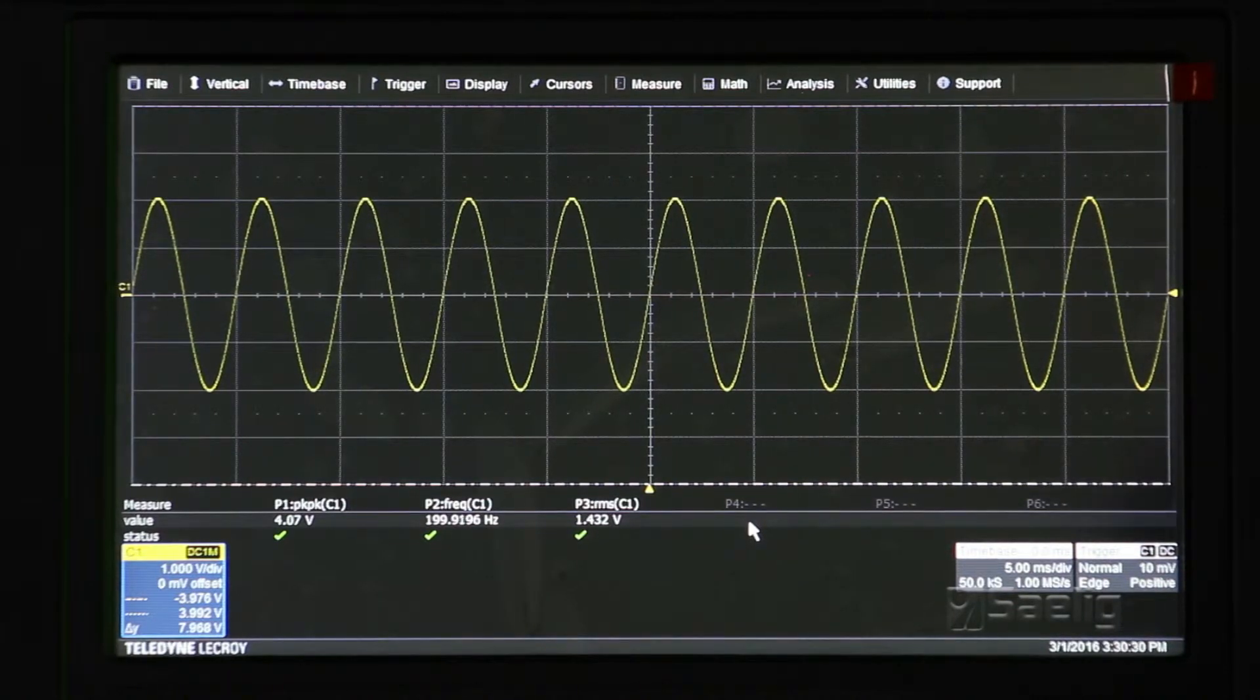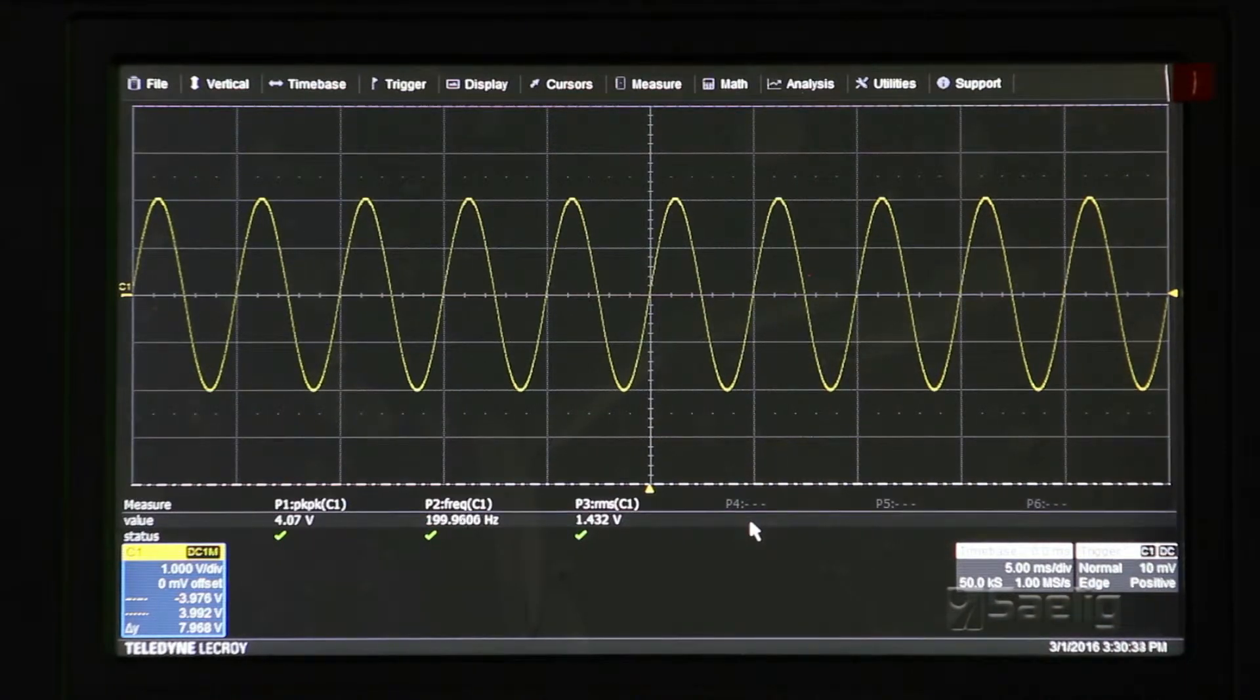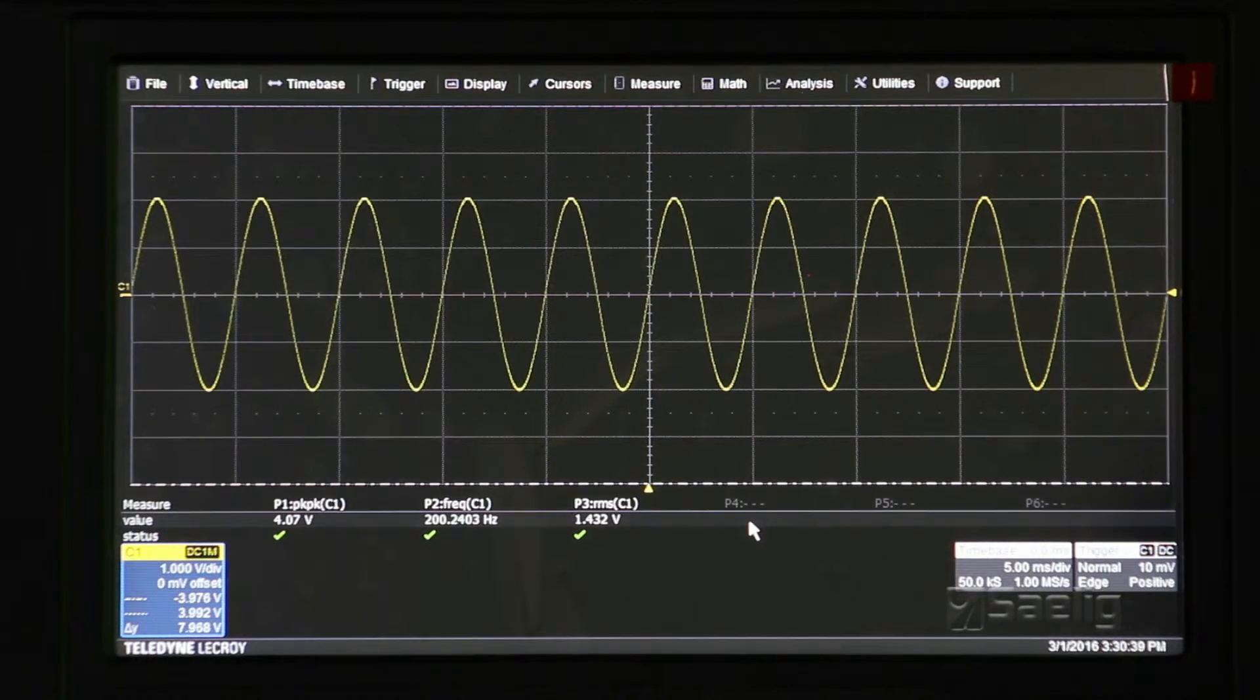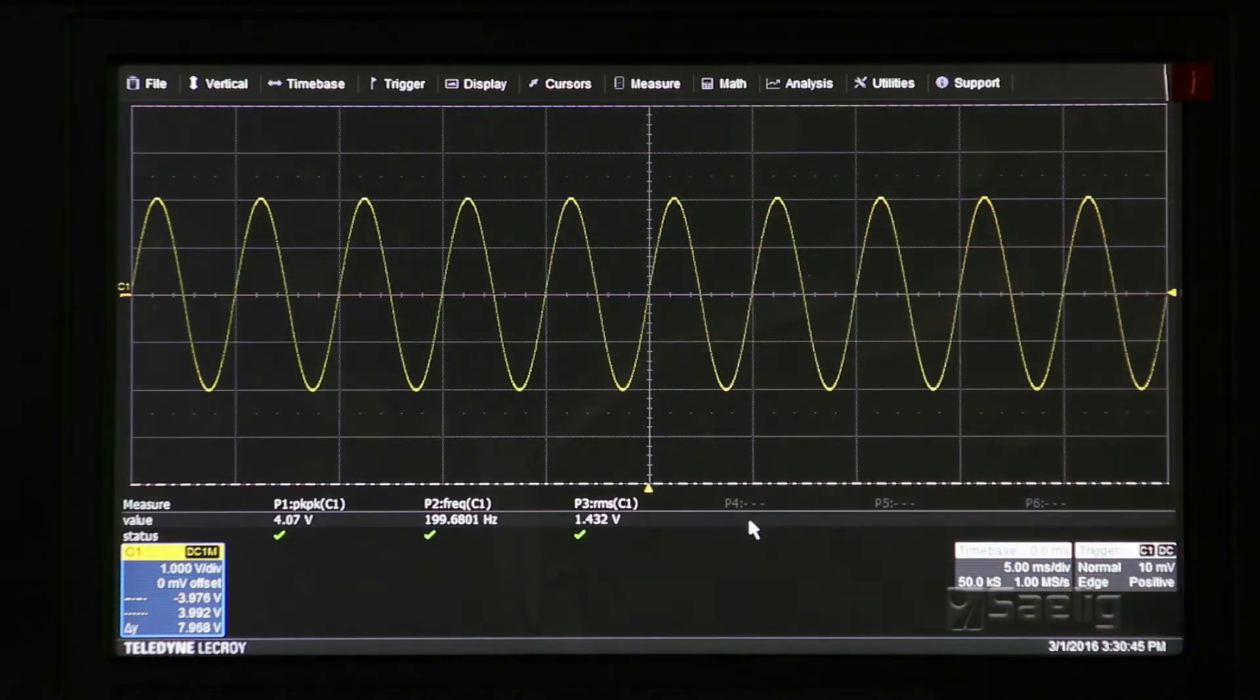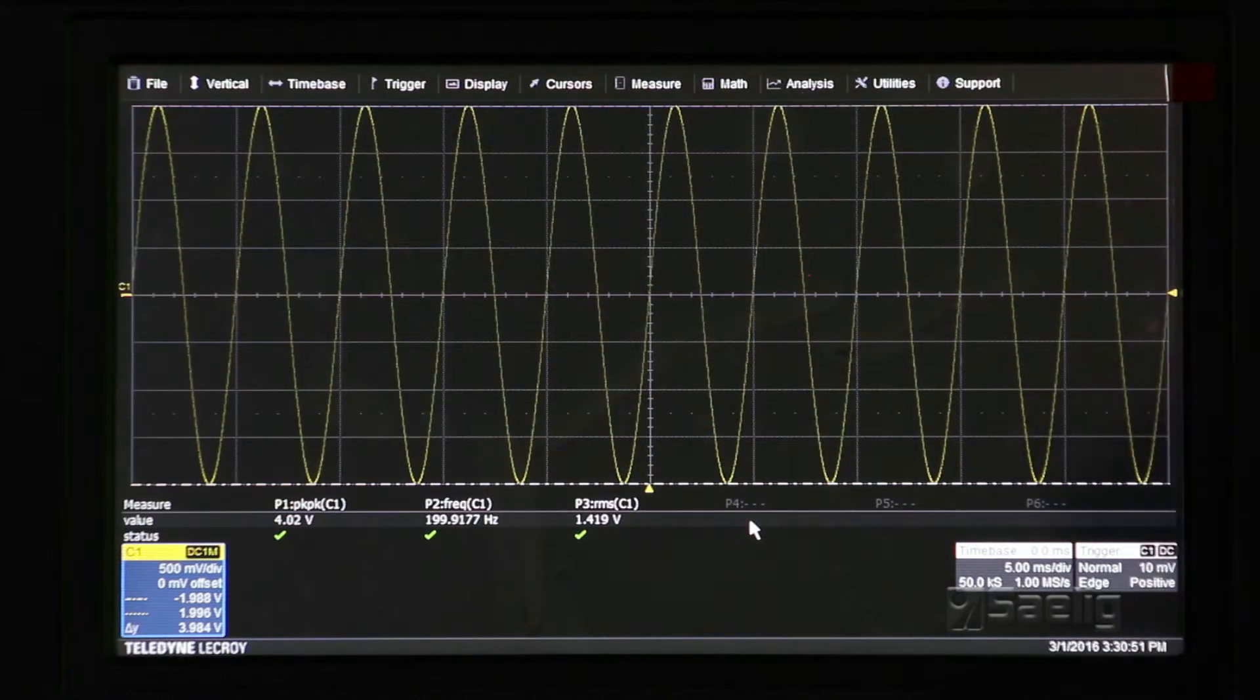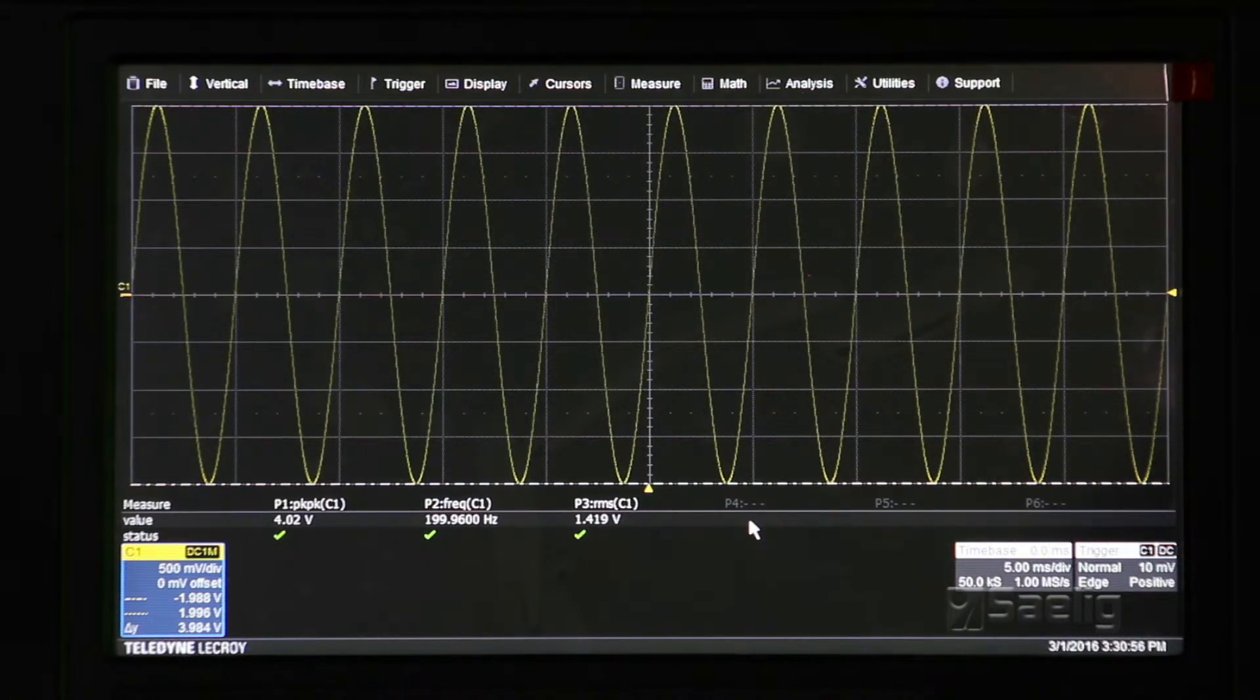The other way that you can do it today is you can use cursors that are built in or you can use an automatic measurement. And actually on this scope, I've got everything turned on at once so you can see it. Now, if you're going to use cursors or even automatic measurements, it's helpful to have the scope show the largest waveform that's practical. And of course, I've got enough room to show four volts peak to peak. So that's what I've got showing here.